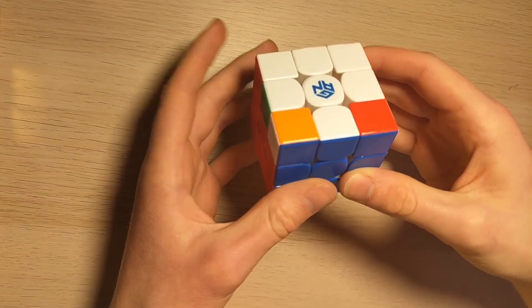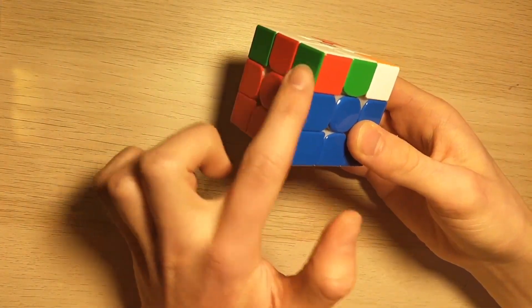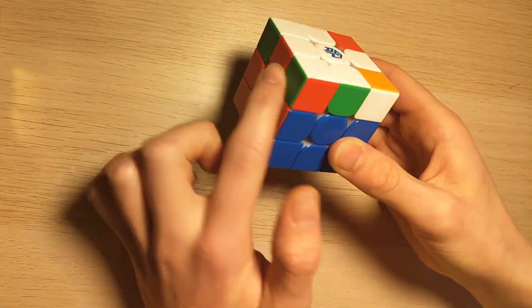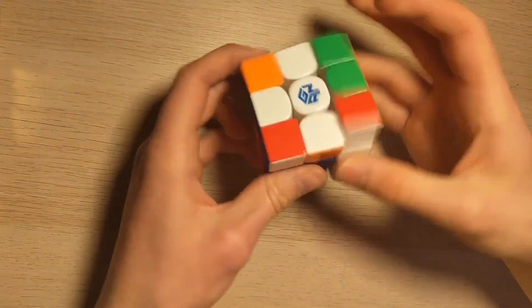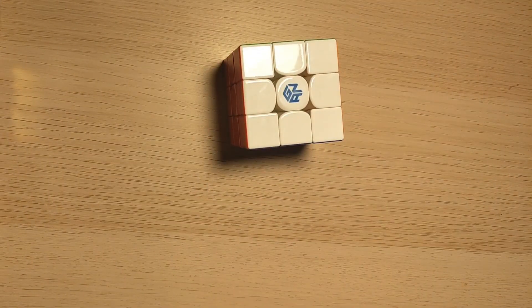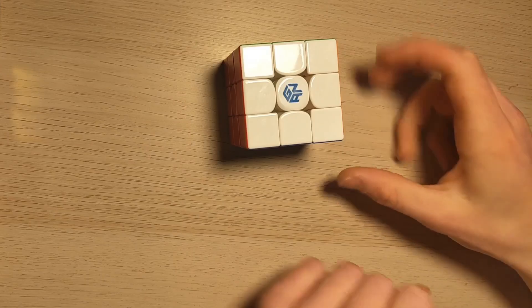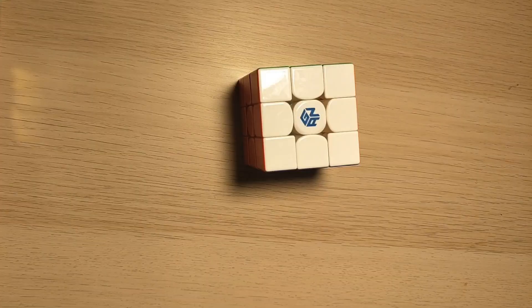Then I did a u' to recognize CBL because I need this pattern here for all the t cases. And then I realized I had to do u2 again and do the algorithm. So this was a 6.47, the move count was 47 moves.